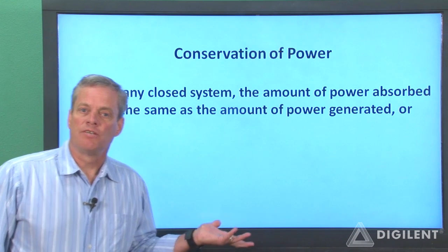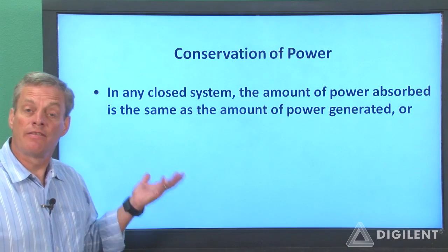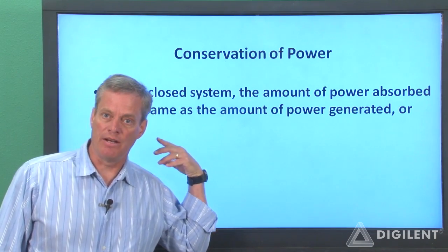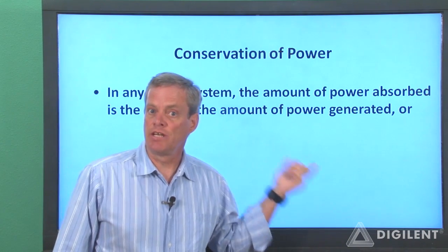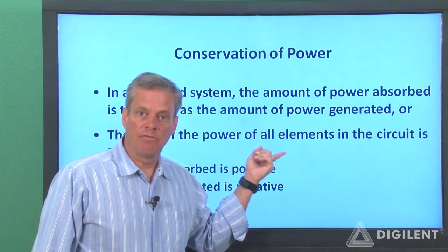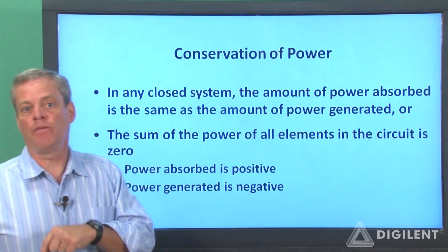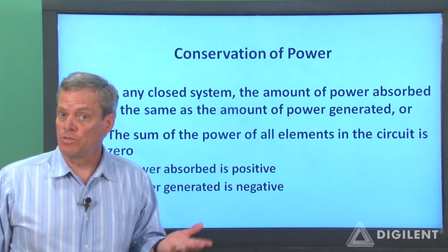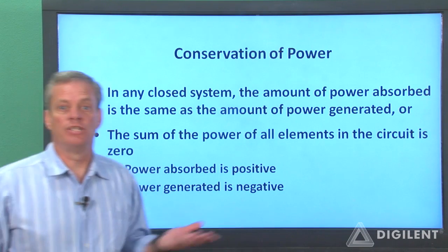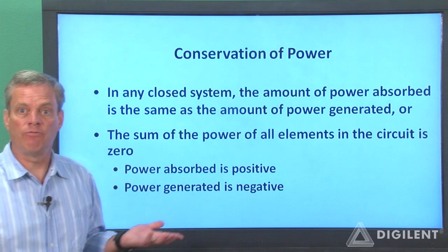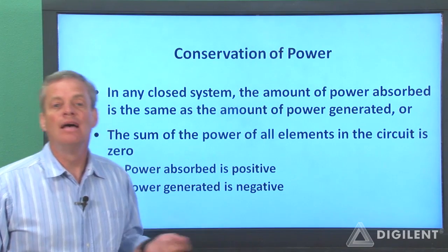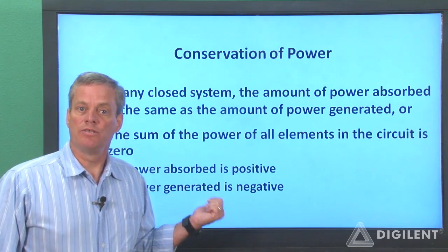Conservation of power simply states that for a closed system, the total energy absorbed is balanced by the total energy generated. This can be very useful for double-checking results of analyses and measurements. An alternate way of stating it is that the algebraic sum of all the power in the circuit must be zero. Since absorbed power has a positive sign and generated power has a negative sign, if we add them up with the appropriate signs, we get zero if the absorbed and generated powers are equal.